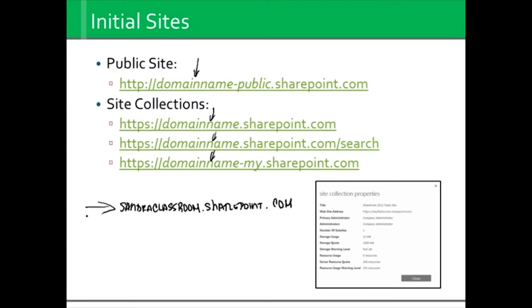They also include a public site, which in this case would be sandraclassroom-public.sharepoint.com. Not everyone uses the public site — most people already have a standing website that's publicly available. But if you don't have one, you can actually do your website in SharePoint and broadcast it publicly. You can also assign your full domain name so there's a redirect when you do www.yourdomain.com. You can also go directly to sandraclassroom.sharepoint.com/search and go right into a full search of everything available on that site.